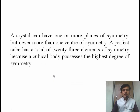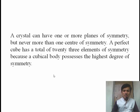A crystal can have one or more planes of symmetry but never more than one center of symmetry. A perfect cube has a total of 23 elements of symmetry because a cubical body possesses the highest degree of symmetry.